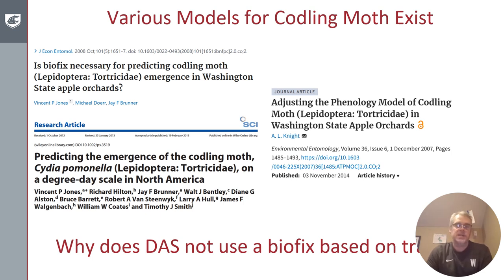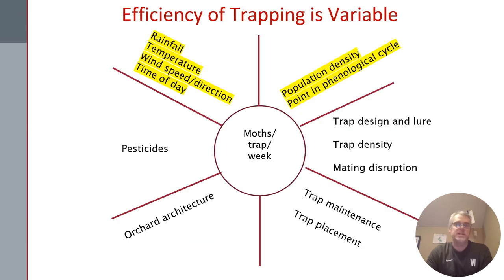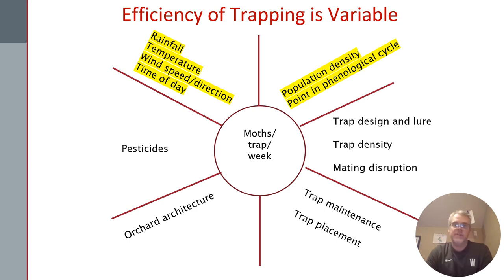So why does the decision aid system not use a biofix based on trap data when so many growers are actively collecting codling moth in pheromone traps? The reason is that the efficiency of trapping is highly variable. Many different factors can determine the rate of capture or the efficiency of how well your traps work, such as pesticides, orchard architecture, the type of trap you use, how well it's maintained, as well as environmental conditions, the density of the population, and the point in the phenological cycle.